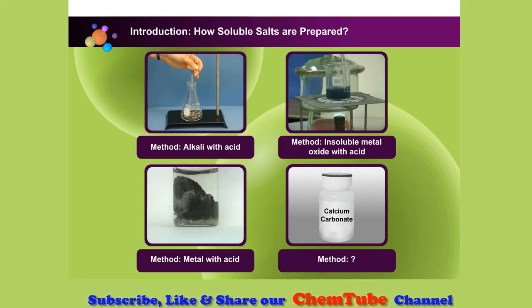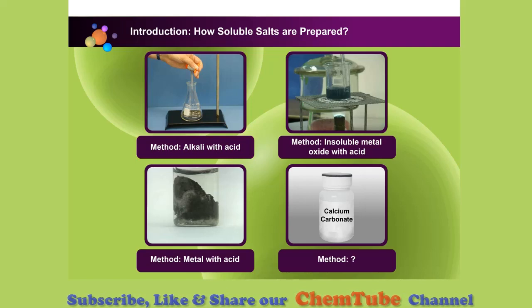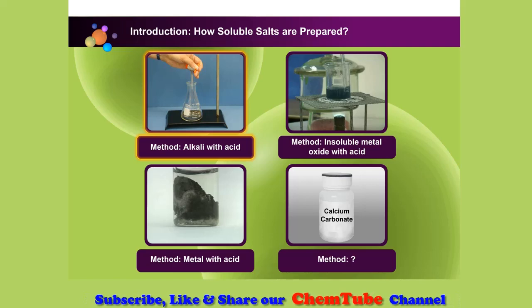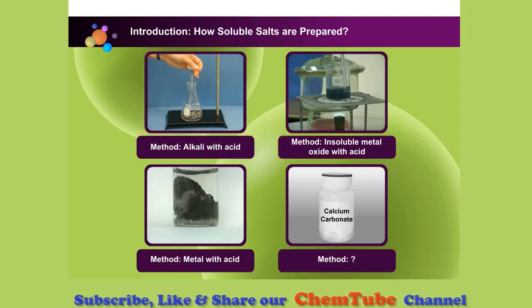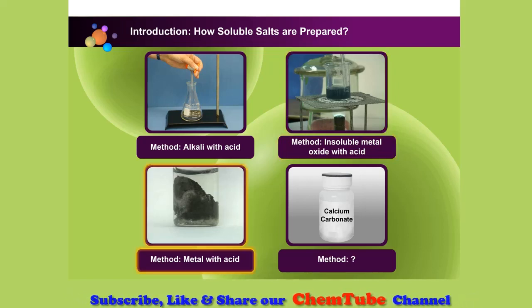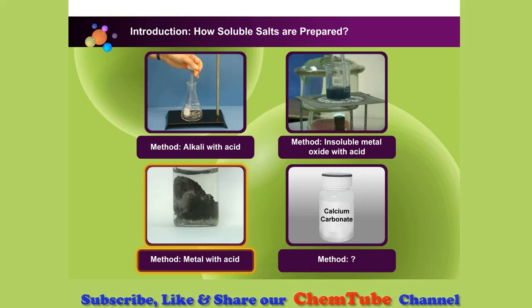These are some methods that we have learned. First method: neutralization, which is the reaction between an alkali and an acid. Second method: reaction between metal oxide and an acid. Third method: reaction between metal and an acid.